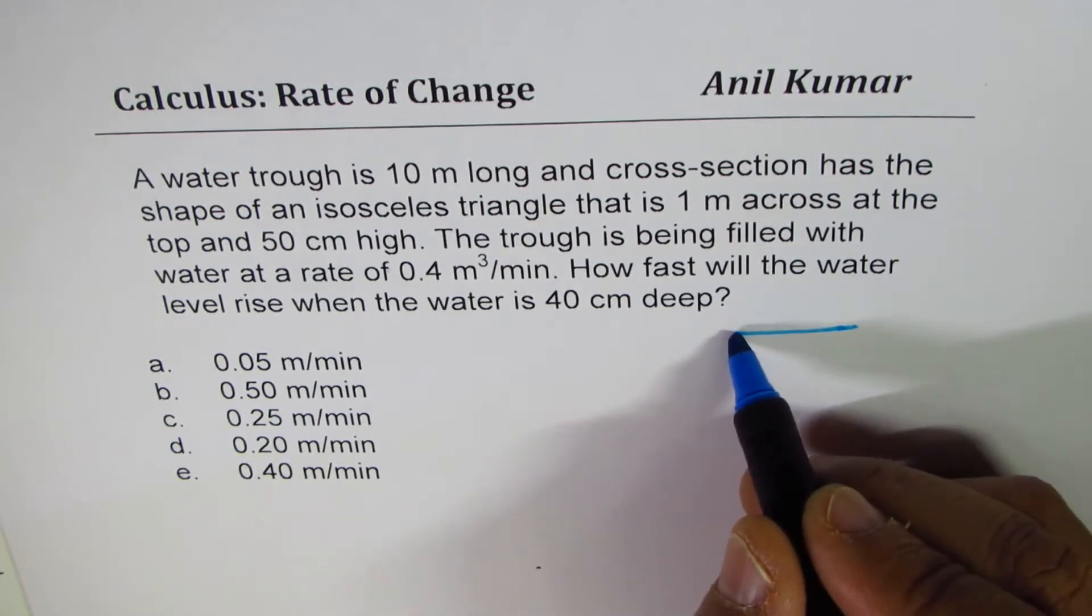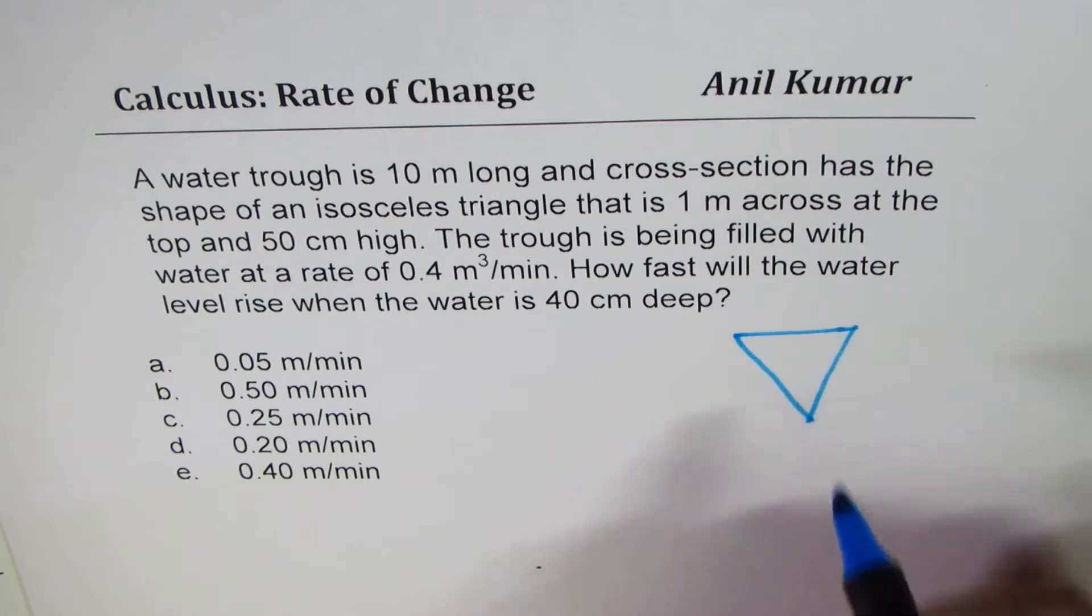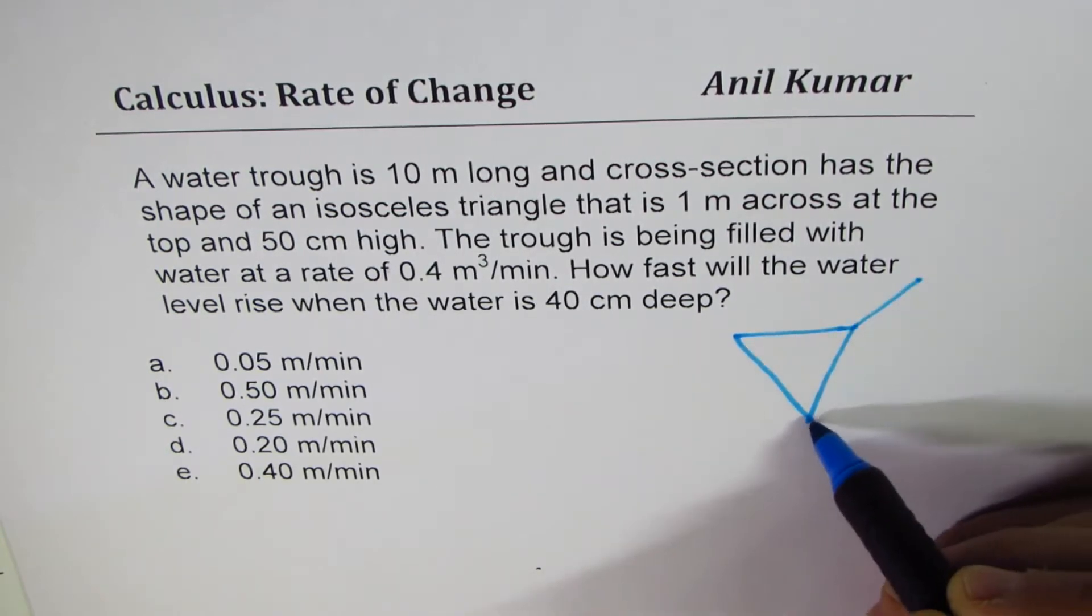So we'll make a slightly bigger diagram of this triangle since we need to work out the area. And yeah, isosceles goes like this.